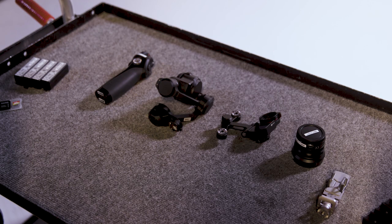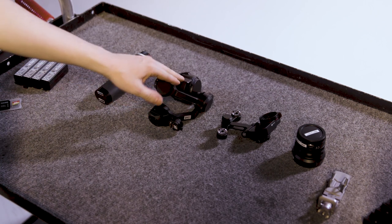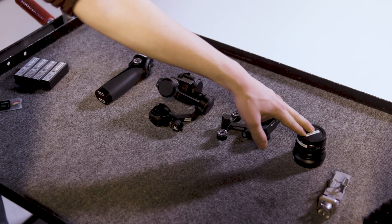To start the setup, we're going to go over assembling the main parts. Our kit will come pre-assembled, but it's helpful to know if you need to pack light. There are four main pieces: the Osmo handle, the X5 camera, the X5 adapter, and the DJI 15mm lens.